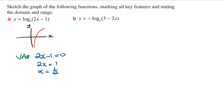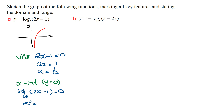To find the x intercept, we let y equal 0 and solve for x. So log_e(2x minus 1) equals 0, which means e to the 0 equals 2x minus 1, so 1 equals 2x minus 1. Taking the minus 1 to the left hand side gives 2 equals 2x, so x equals 1. The coordinates of the x intercept are (1, 0).